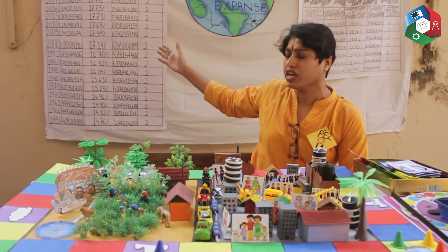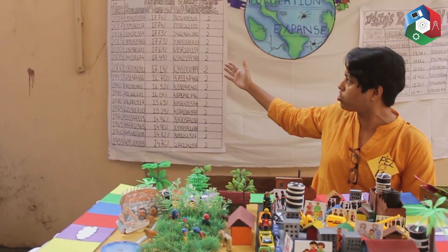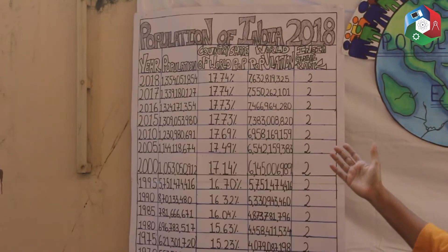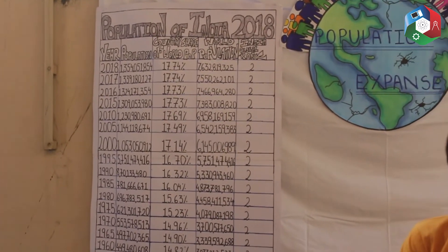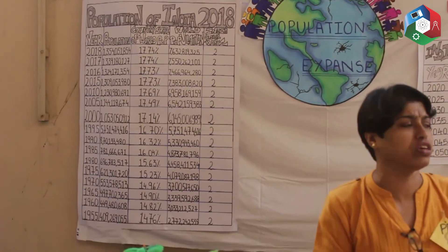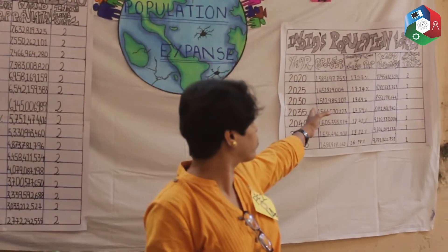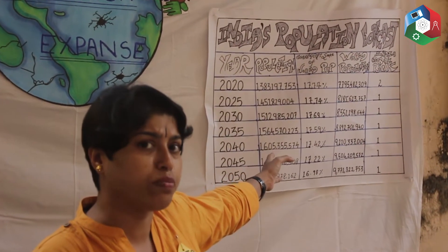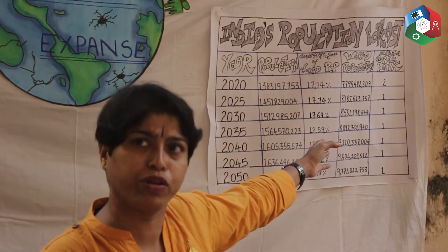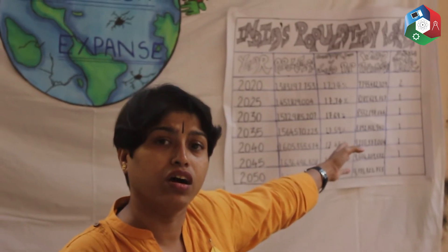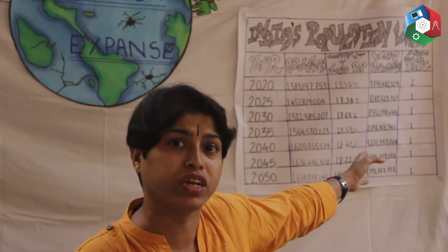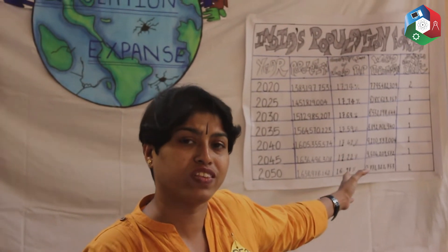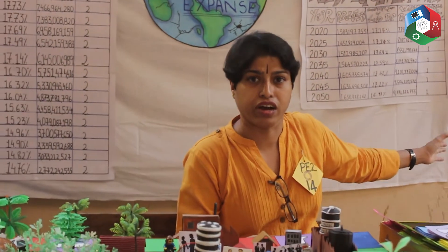But at the same time, now in 2018 we have already reached 1.3 billion. If you can see the chart over here, it exactly tells you we have touched 1.3 billion, and very soon, around 2030, India is going to be 1.5 billion. That means we will rank first in overpopulation — not economic development, but overpopulation. You will see that we are even beating China.